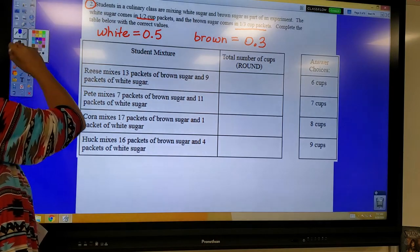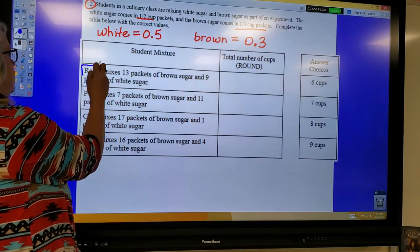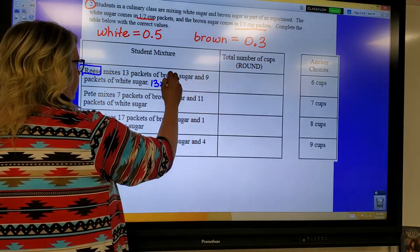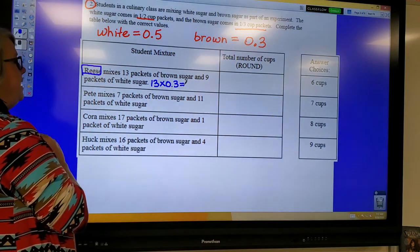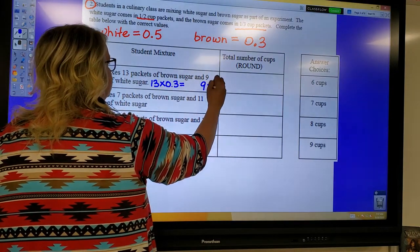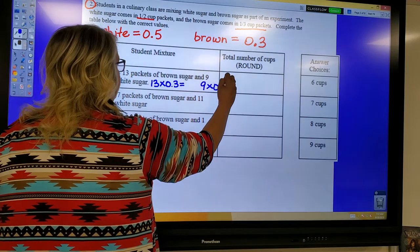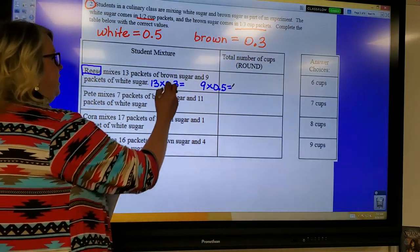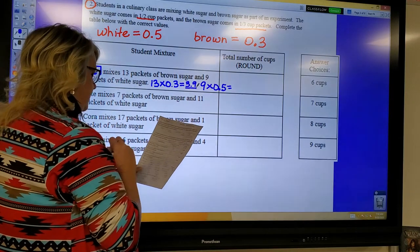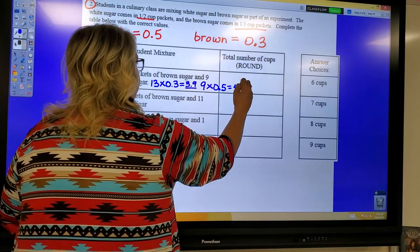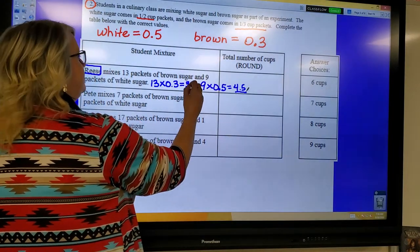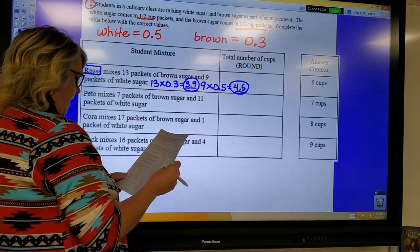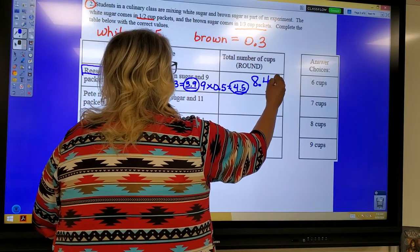All right, so I'm going to focus on Reese first. I'm going to do Reese in blue. And Reese uses 13 packets of brown. So 13 packets, brown is 0.3. I'm going to get that answer. And 9 packets of white. So 9 packets of white, which is 0.5. So 9 times 0.5. Use that calculator. 13 times 0.3 is 3.9. And 9 times 0.5 is 4.5. And then you are going to add these two numbers together.